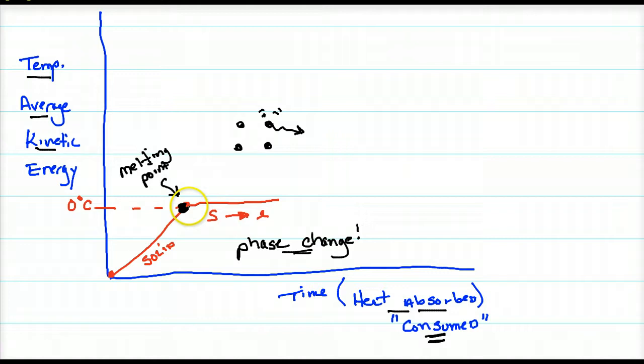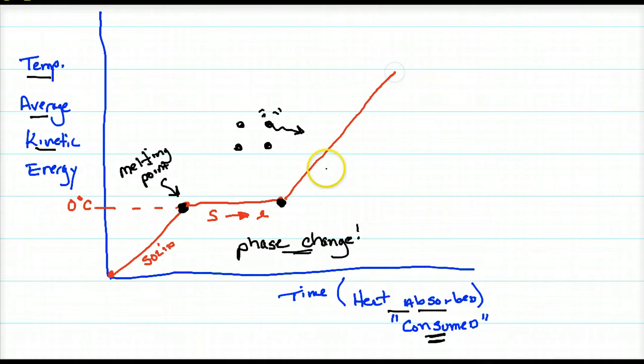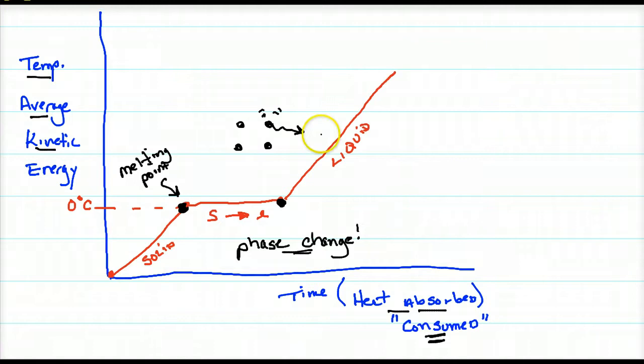At this point it's 100% solid. Moving along the plateau: 75% solid, 50% solid, 25% solid, and eventually 0% solid. At that final point, all of the solid has been converted to a liquid. Once it's all liquid, we're going to see another spike in temperature — and this is the liquid phase.